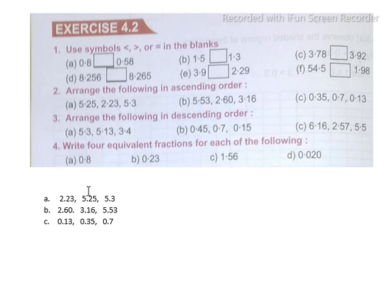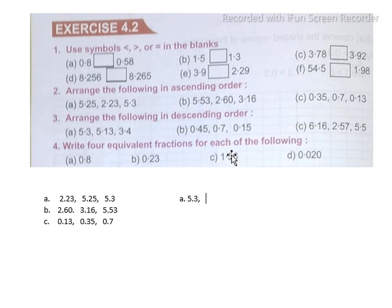Now descending order. For descending order Part A, the three numbers are 5.3, 5.13, and 3.4. 5.3 is the greatest, so it comes first. Then 5.13 is next. And the smallest is 3.4.